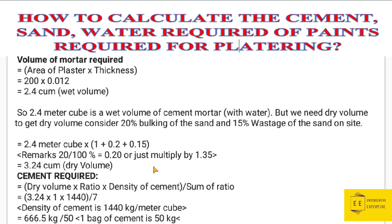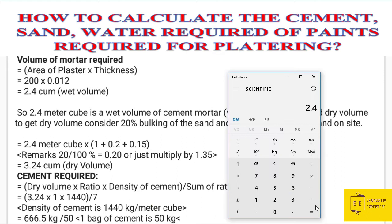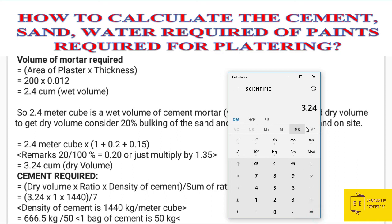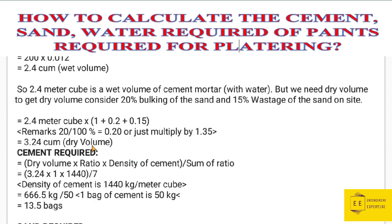Always multiply the wet volume of mortar by the factor 1.35 to get the dry volume. Calculating: 1 + 0.20 + 0.15 = 1.35. Multiplying this factor by the wet volume of 2.4 cubic meters gives us 3.24 cubic meters. This is the dry volume of mortar required.